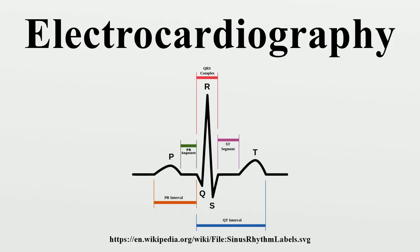In a conventional 12-lead ECG, 10 electrodes are placed on the patient's limbs and on the surface of the chest. The overall magnitude of the heart's electrical potential is then measured from 12 different angles and is recorded over a period of time.